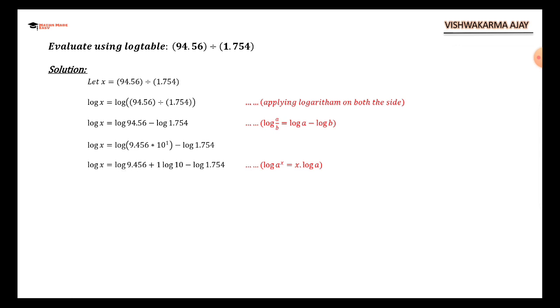Log 9.456 plus log 1 log of 10 minus log of 1.754. Now you know how to find the log of 94.56 from the last example, so I'm going to write it: 0.975 plus 0.003 plus 1, since log 10 equals 1. Log of 1.754 is minus, this is the minus outside sign, and log of 1.754 is 0.230 plus 0.001 from the mean difference. Now we are going to add all of them together, so we have log x equals 1.7317.